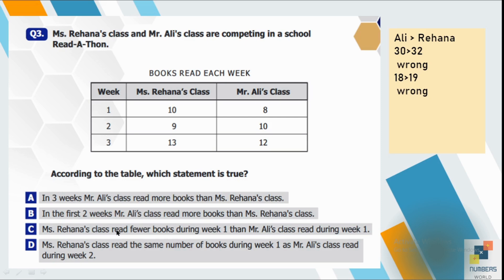C part is Ms. Rihanna's class read fewer books during week 1 than Mr. Ali's class read during week 1. So you'll see the number of books read by the both classes in week 1. According to the statement Ms. Rihanna's class has read fewer books than Ali's class. Which is wrong because 10 is not less than 8. So again not correct.